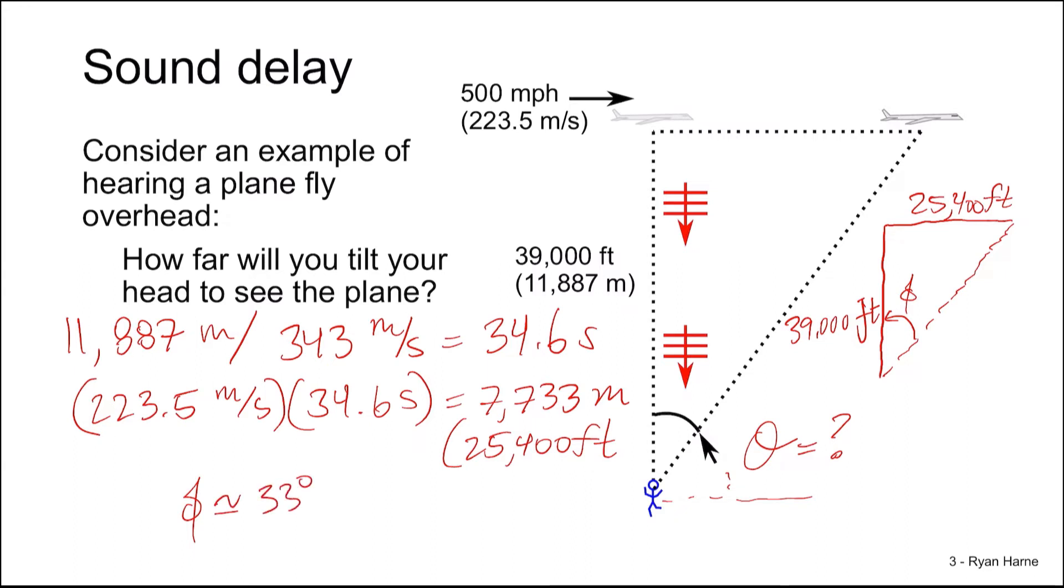So that means that we look up by an angle of theta is 57 degrees. So this is much less than 90 degrees. And it's clear evidence that there's significant sound delay in the atmosphere over long distances.